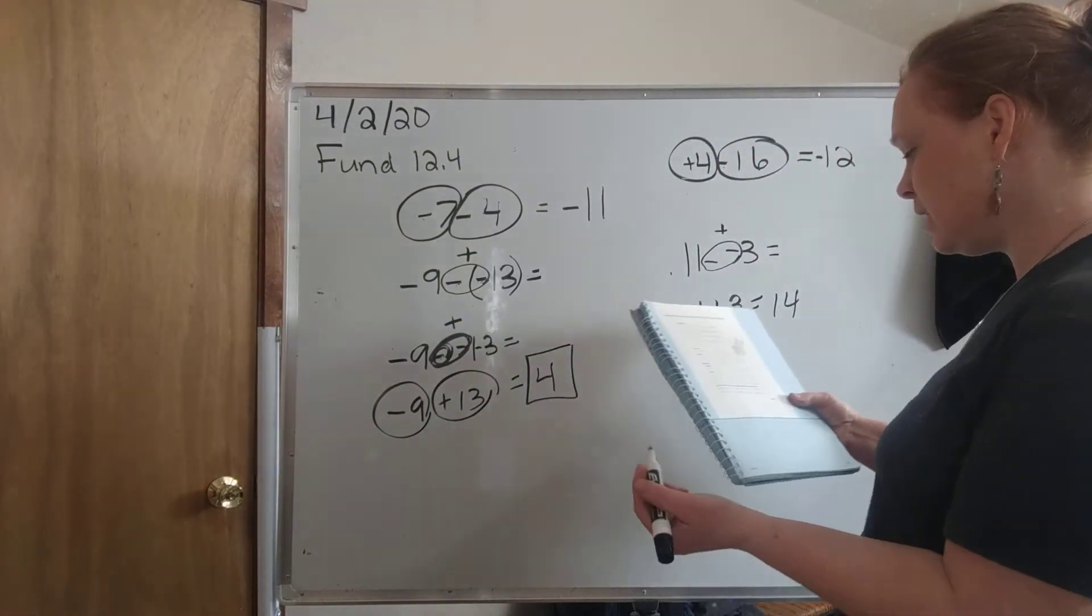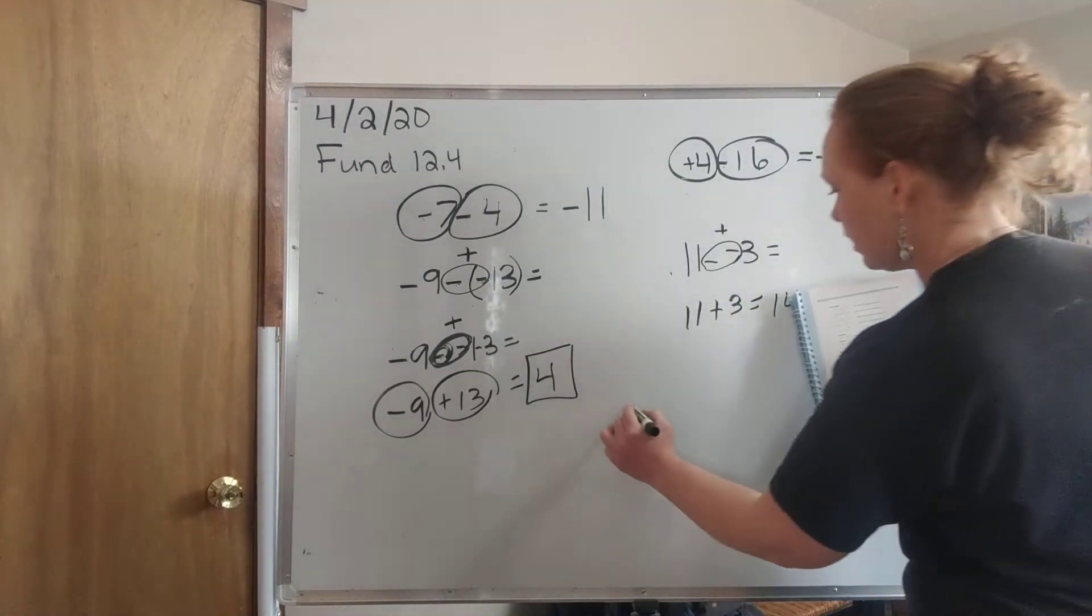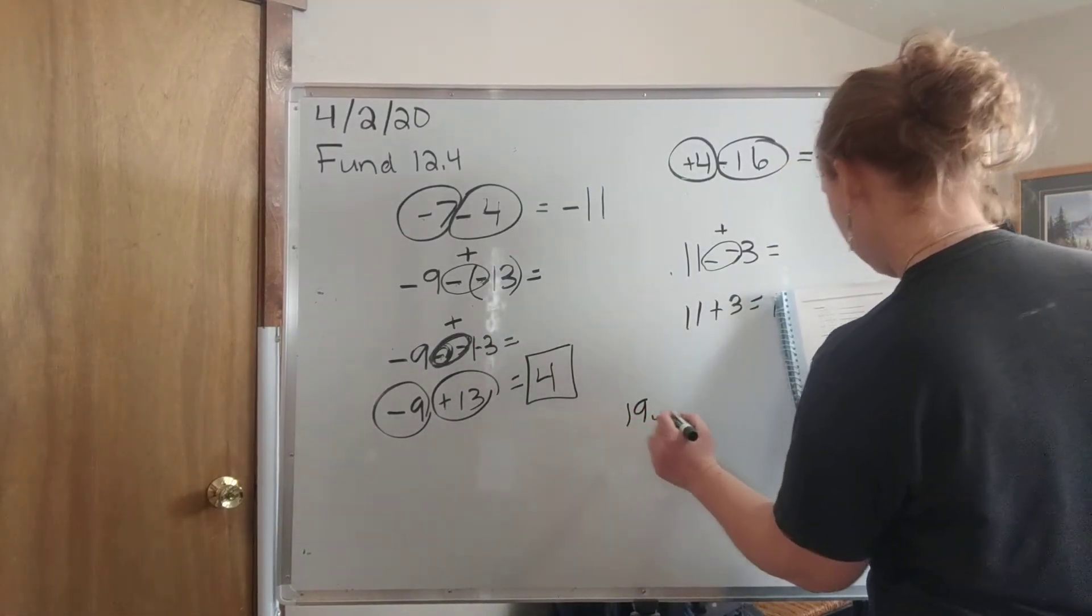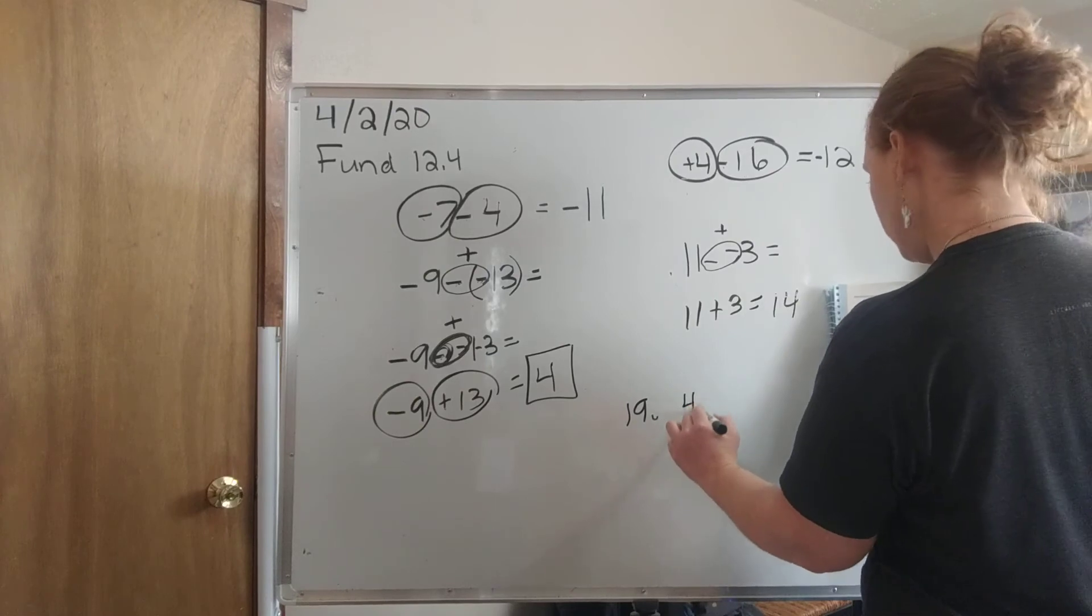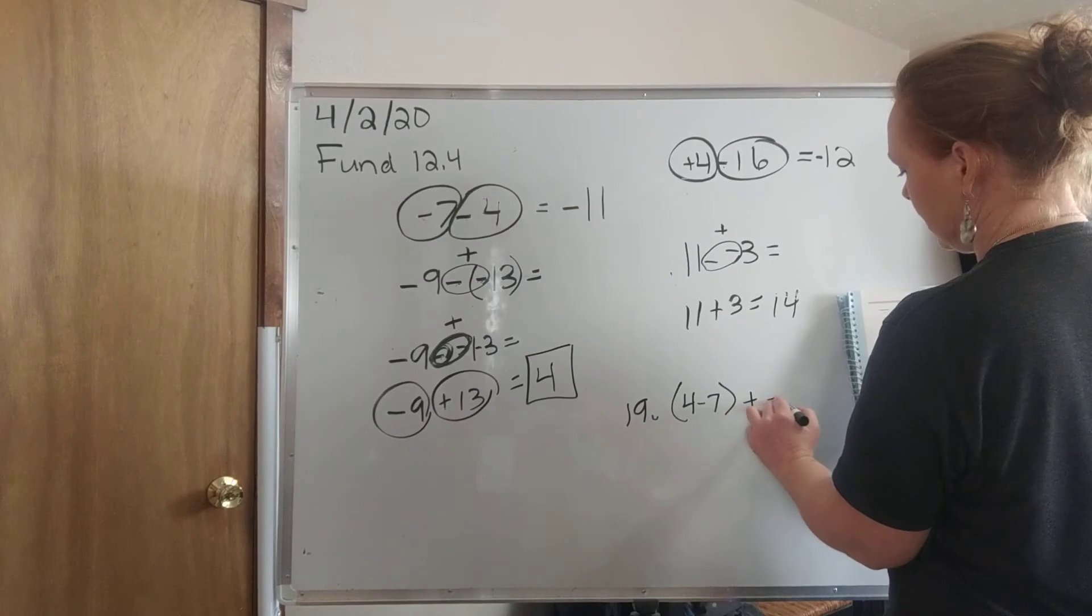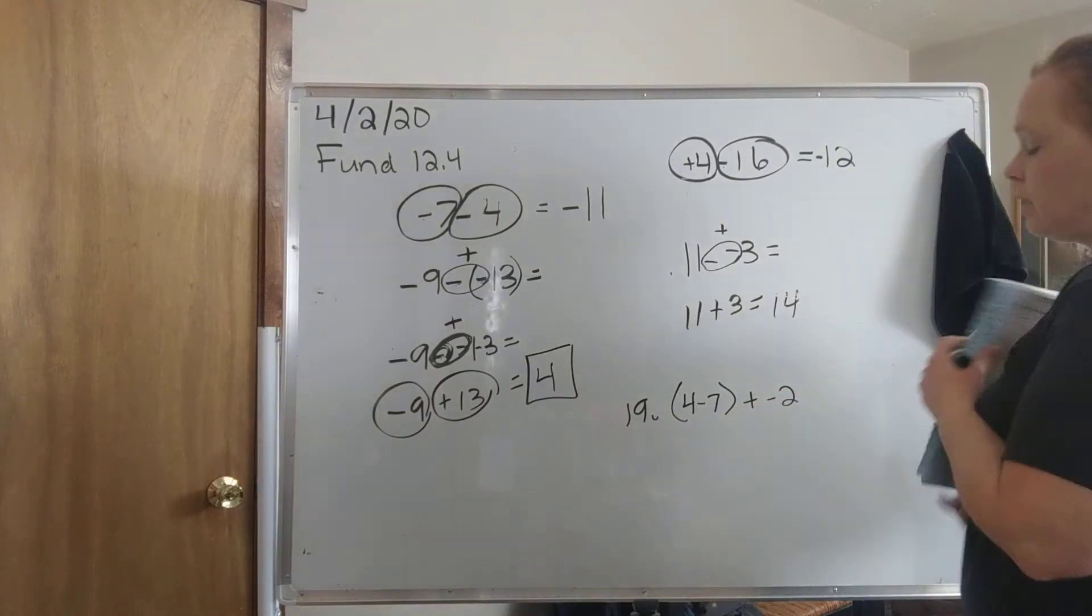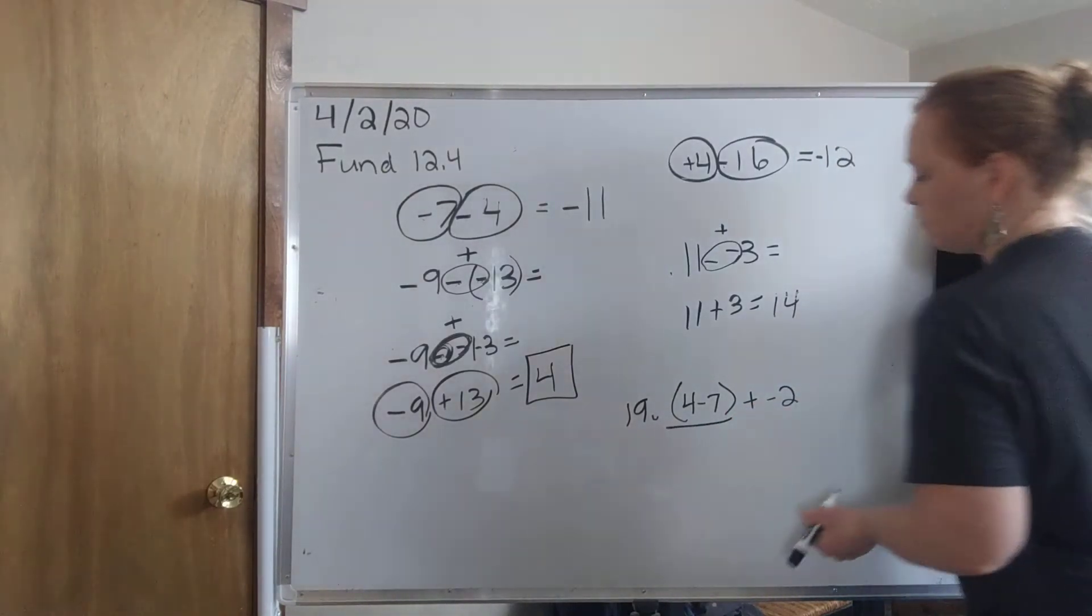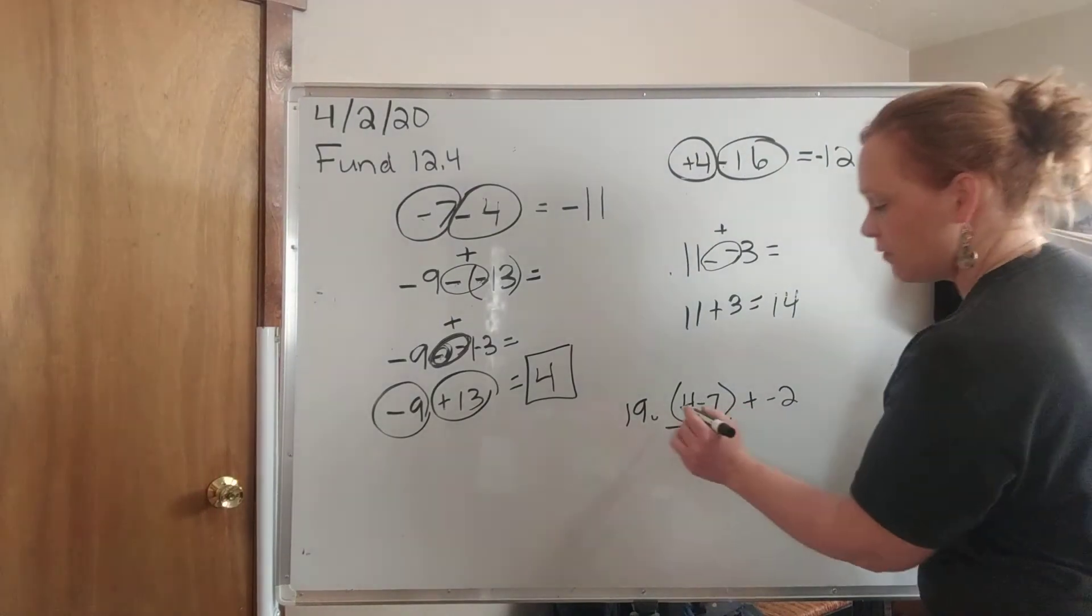And let's go through number 24. Look at number 19. I'm going to do that one with you really quick before I let you go. It says 4 minus 7 plus negative 2. So we want to do what's in parentheses first.